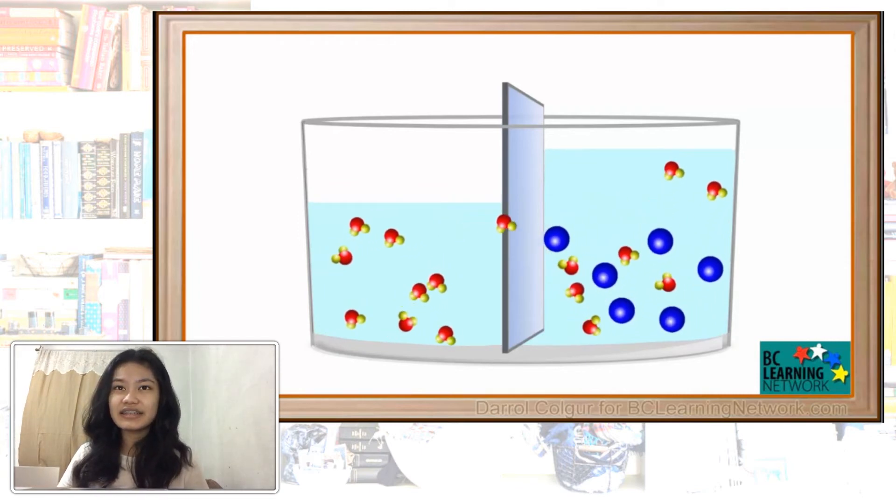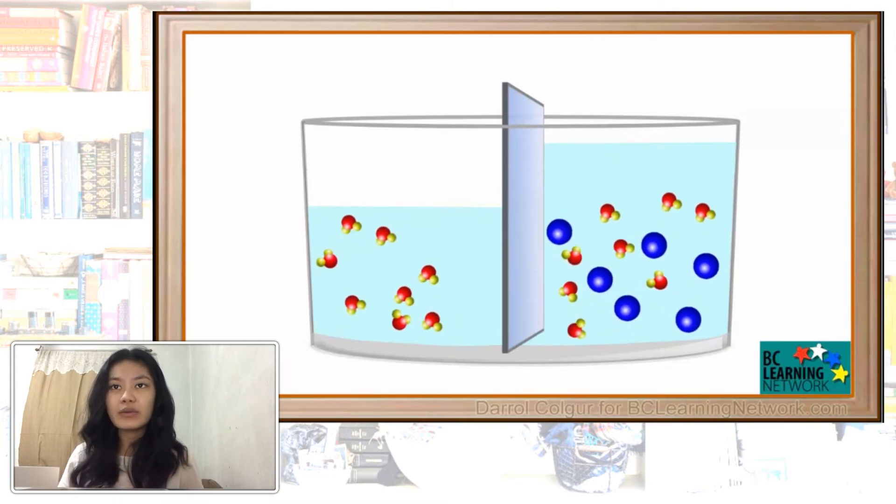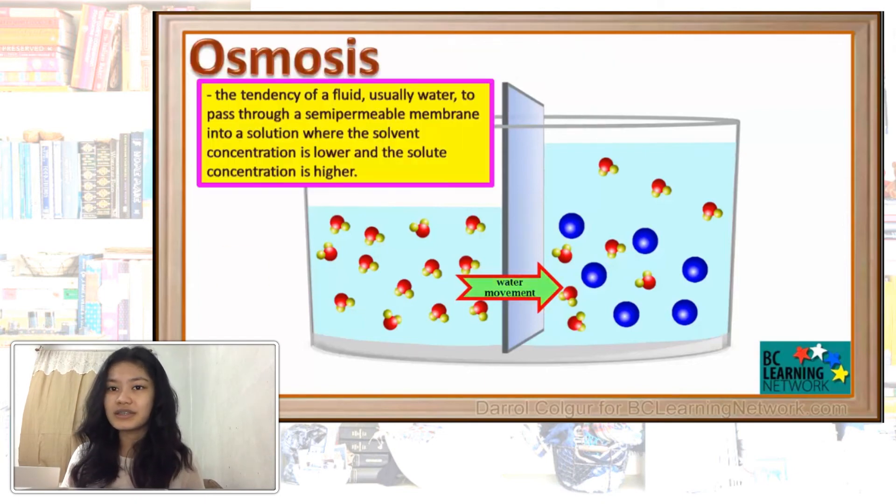The concentration of water is now equal on both sides. Equilibrium has been reached. Stopping the animation, we see that the water has diffused through the barrier from an area of pure water to an area where sugar, in this case, is dissolved in the water. This process is called osmosis.